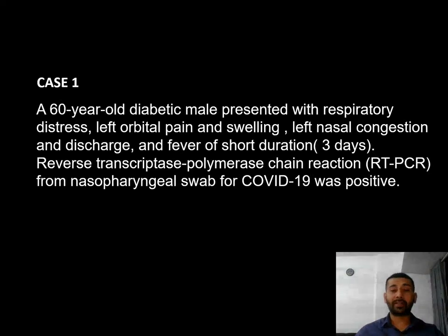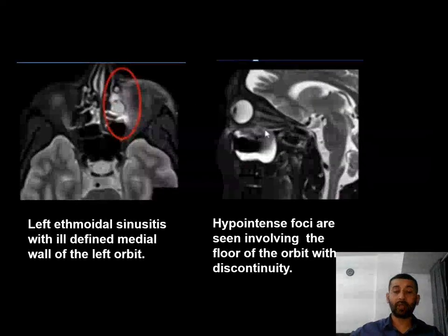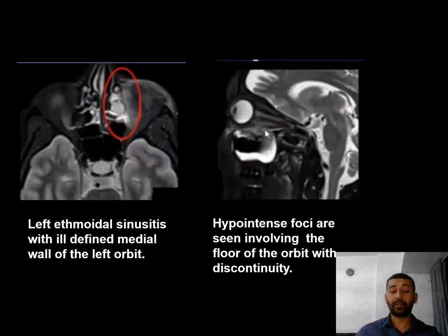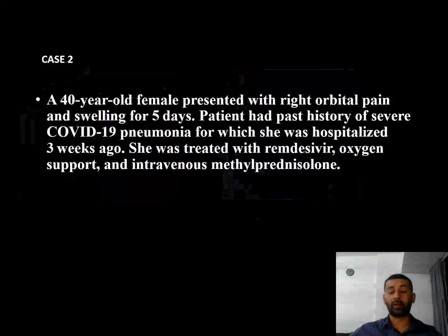Case 1: A 60-year-old diabetic male presented with respiratory distress, left orbital pain and swelling, left nasal congestion and discharge with fever of short duration. RT-PCR from nasopharyngeal swab for COVID-19 was positive. On axial images, left ethmoidal sinusitis with an ill-defined medial wall of the left orbit and hypointense foci involving the floor of the orbit with discontinuity are seen.